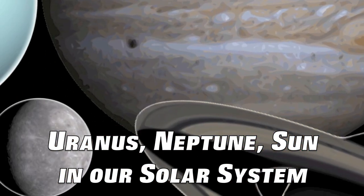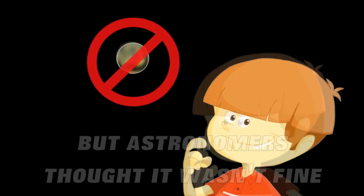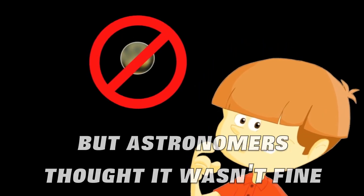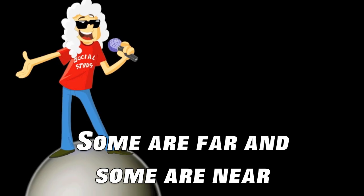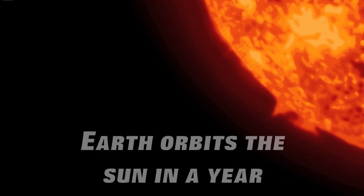Pluto used to be number 9, but astronomers thought it wasn't fine. Some are far and some are near. Earth orbits the Sun in a year.